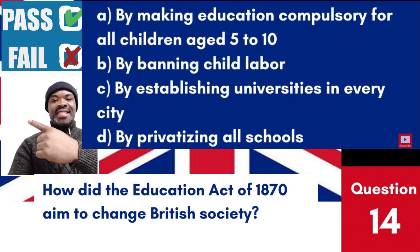Question 14: How did the Education Act of 1870 aim to change British society? a. By making education compulsory for all children aged 5 to 10. b. By banning child labour. c. By establishing universities in every city. d. By privatising all schools. Answer: a. By making education compulsory for all children aged 5 to 10. The Education Act of 1870 aimed to make elementary education available for all children in England and Wales, marking the beginning of state involvement in education.